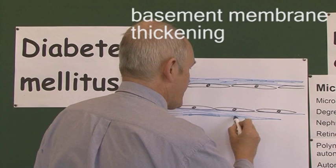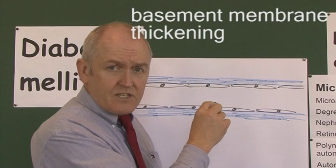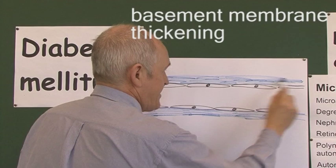This is why, of course, the management is so important. If you can keep the blood sugar levels down near physiological ranges, then this is way less likely to occur. But it does occur in many patients with diabetes. Basement membrane thickening.